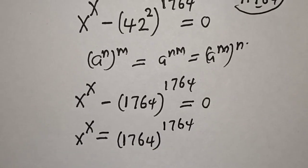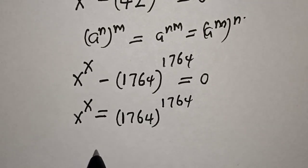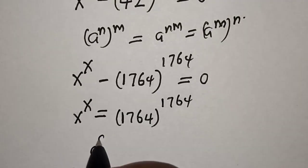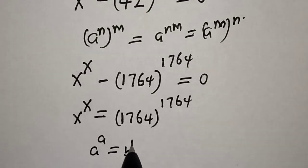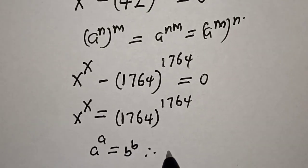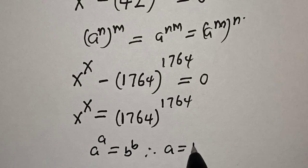Now if you have a raised to power n equal to b raised to power n, therefore a is equal to b.